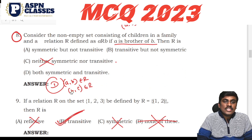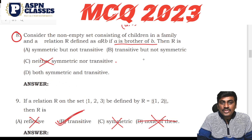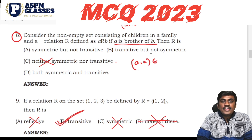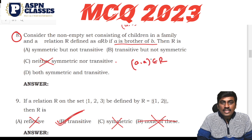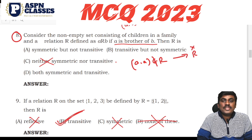First we have to check if the relation is reflexive. We have to check symmetric and transitive properties. For reflexive: 'A is a brother of A' — this is not necessarily true. So it is not reflexive.